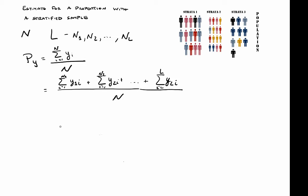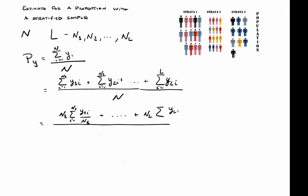I'm going to continue decomposing this expression and write these sums as proportions by dividing and multiplying by the size of each stratum. So here I divide the sum of Y1i by the size of stratum 1, with the sum going from 1 up to N1, and multiply by N1. These two N1s cancel out, so I still have the same sum. I'll do this again for each stratum, up to NL, and divide by the size of the population.